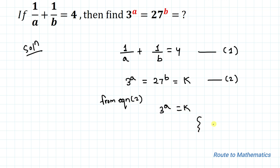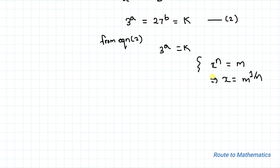We know an exponential law that is x to the power n equals m can be written as x equals m to the power 1/n. So by applying this law, we can write 3 equals k to the power 1/a. Let's take it as equation 3.